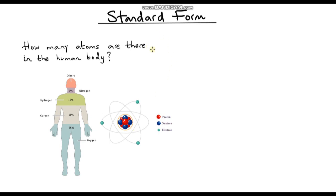Hello and welcome to a video on standard form, and a nice interesting question to kick things off: how many atoms are there in the human body? Down here we've got a couple of pictures. On the right hand side is an example of an atom — you can see it's made up of protons, neutrons and electrons. On the left hand side, this is the composition of atoms in our bodies. We're predominantly made up of oxygen, then a large amount of carbon, hydrogen, and a bit of nitrogen. This makes up about 96-97% of our human bodies, with roughly 3% other chemical elements. So the question is, how many of these atoms are there in an average adult human body?